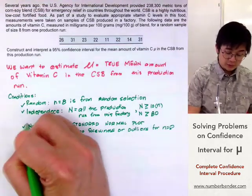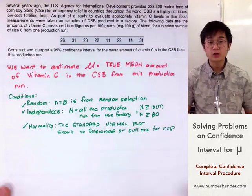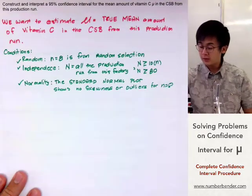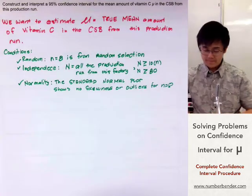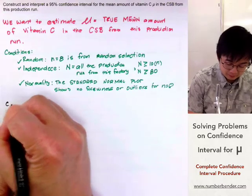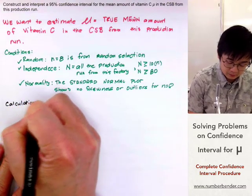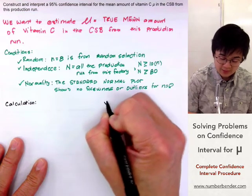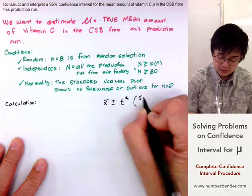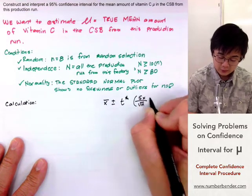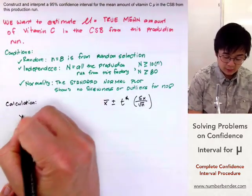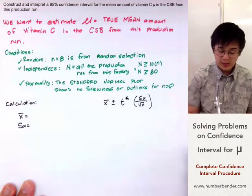Now that all three conditions were satisfied, we can now construct our confidence interval and find the estimated population mu based on our procedure. The calculation will be based on the formula for x-bar plus or minus t-star times Sx all over the square root of n.